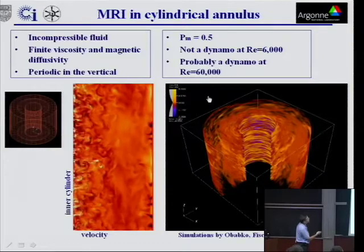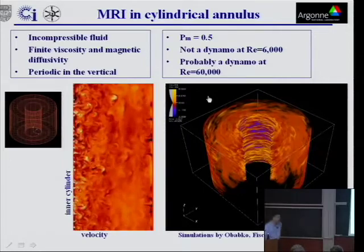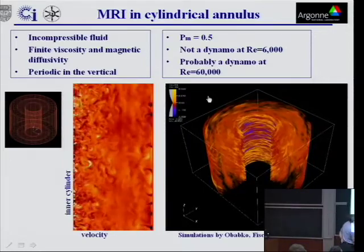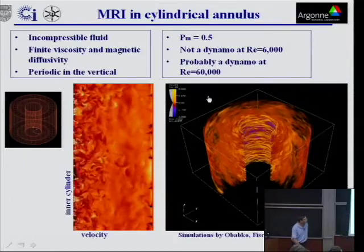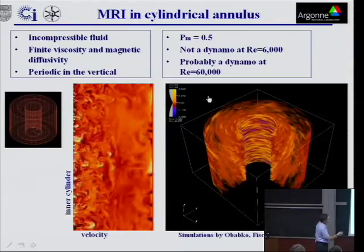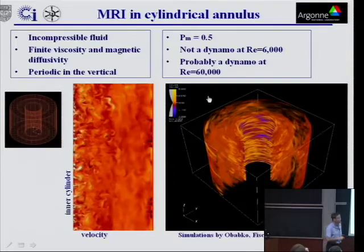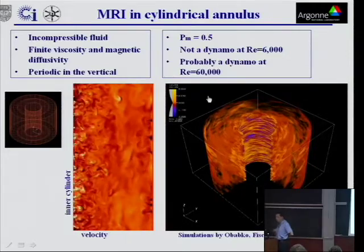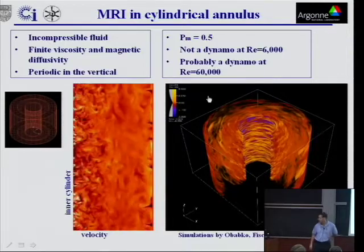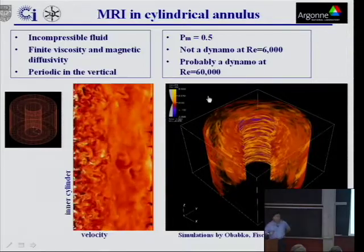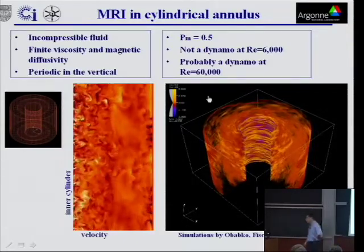And so these are for an incompressible fluid, finite viscosity, and magnetic diffusivity. So this is a code which resolves... this is the velocity fluctuations, the same quantity as this. And what we know for these magnetic Prandtl numbers at half, and what we know for sure, we know that at a Reynolds number of 6,000, this thing is not a dynamo. So if you leave it alone, it will just go back to co-rotation flow. And we seem to think that it's probably a dynamo at 60,000.